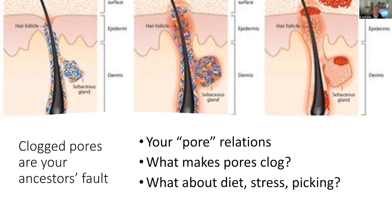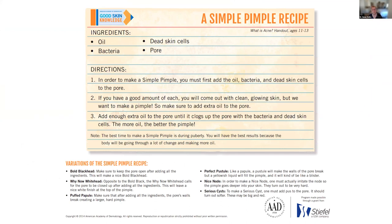One thing that livens up the exam room: the clogged pores are your ancestors' fault. Parents often say the child doesn't wash their face, but I explain that if you have a clogged drain and just scrub across the top, the clog won't open — you have to ream it out. So it's your pore relations causing your acne. The simple pimple recipe: you need oil coming at puberty, bacteria that are on everyone's skin anyway, dead skin cells, and the pore — and then it clogs up.